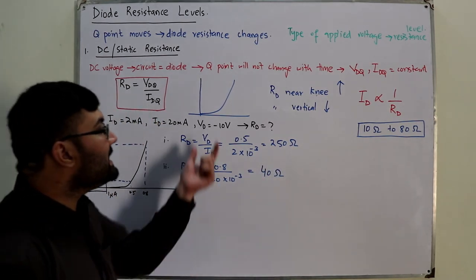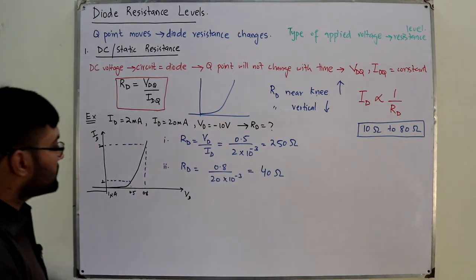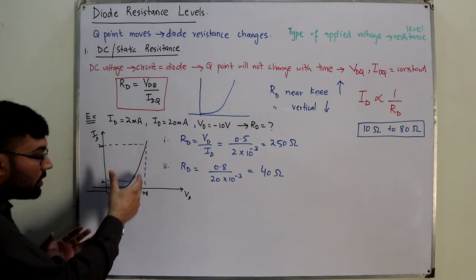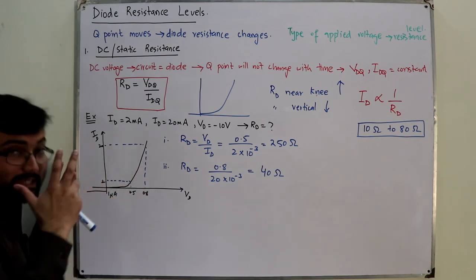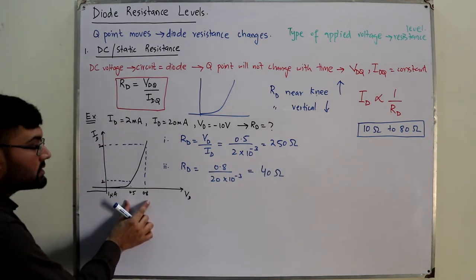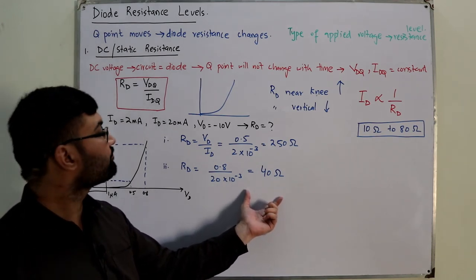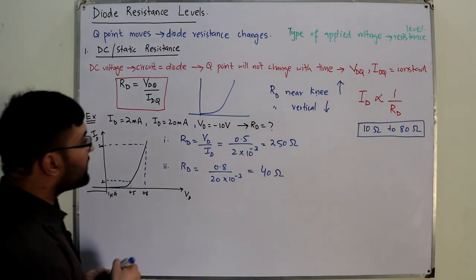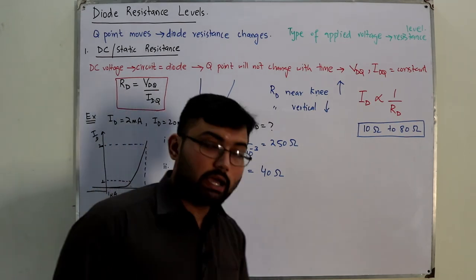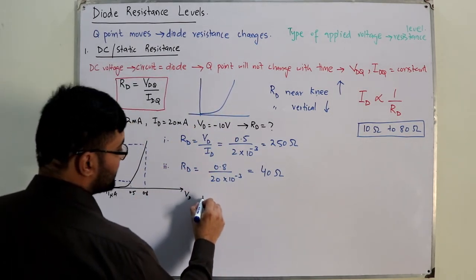So you could see this. I told you that Rd near the knee or below the knee is quite large. And you could see this is at the knee or a little higher, but it's near the knee, and the resistance is quite large. And just 0.3 volts away, the resistance has dropped significantly. And of course, for the reverse bias region, it would be quite high, naturally high, and we'll get a high value.